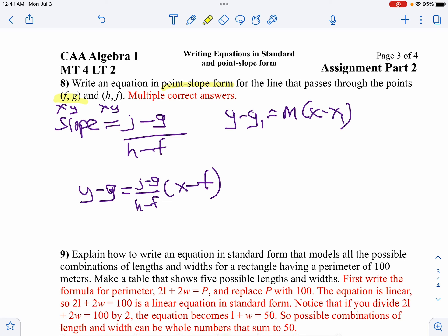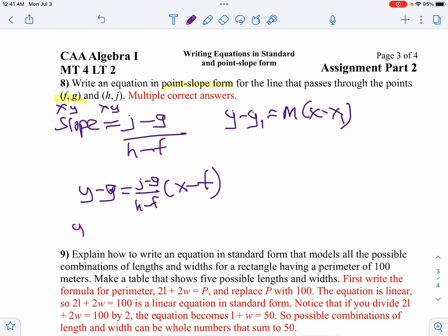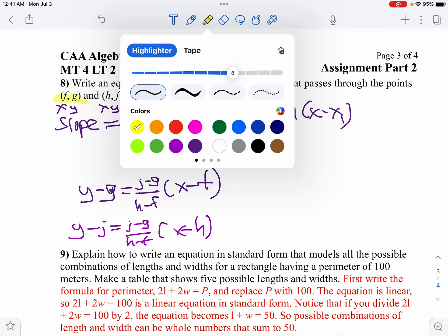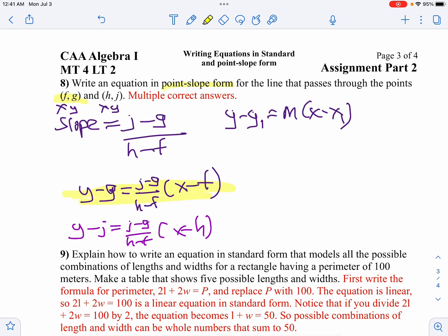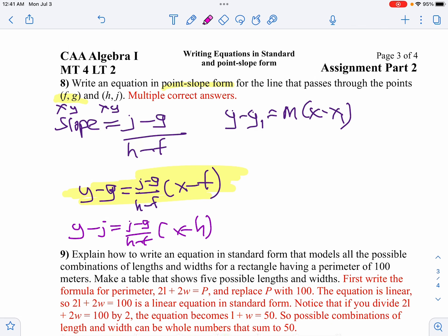Now I could use my second point. Instead of writing g, I could have h. So I could write it as y minus j equals j minus g all over h minus f times x minus h. So you have two correct answers here. I don't care which one you use. Both of them are correct. So I said multiple correct answers, but that's really not correct. There are two different correct answers on this one.